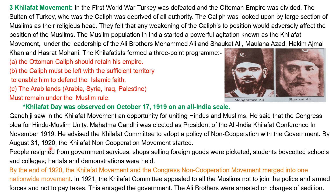By August 31, 1920, the Khilafat non-cooperation movement started. People resigned from government services, shops selling foreign goods were picketed, students boycotted schools and colleges, and hartals and demonstrations were held. By the end of 1920, the Khilafat movement and the Congress non-cooperation movement merged into one nationwide movement. In 1921, the Khilafat Committee appealed to all Muslims not to join the police and armed forces and not to pay taxes, which induced the government to arrest the Ali brothers on charges of sedition.